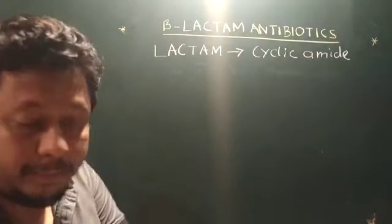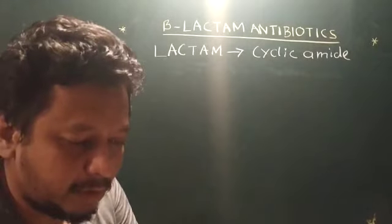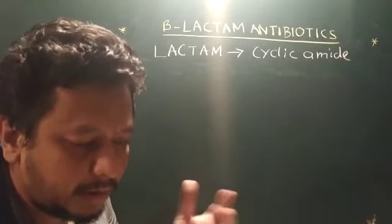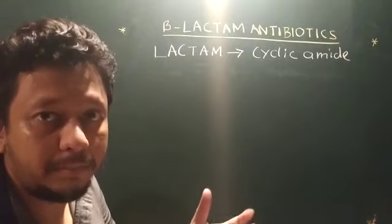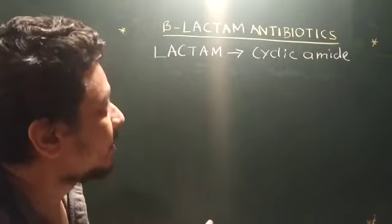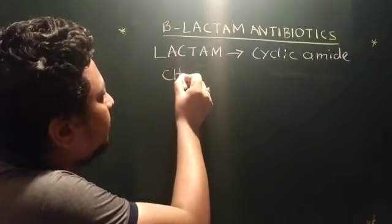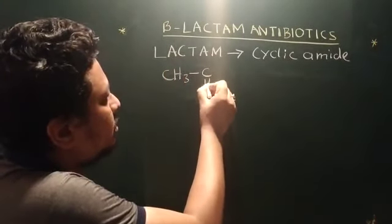Now this is very important concept to start with. Cyclic amide specifically, it is lactone plus amide, you can say. Now we have a simple amide known as acetamide, CH3-CONH2.